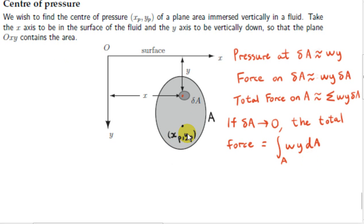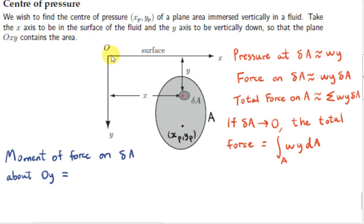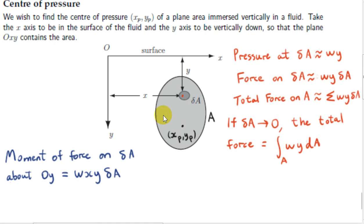To get the coordinates of the center of pressure, xp and yp, we need to consider the moment of the force on delta A about the x- and y-axes. To get the moment of the force on delta A about the y-axis, we multiply the magnitude of the force acting on the object by the perpendicular distance of the line of action of that force to this axis. That perpendicular distance is just the x-coordinate of delta A. The force on delta A is Wy delta A, so we multiply that by x. Summing all these moments over the entire area A gives the total moment about the y-axis.